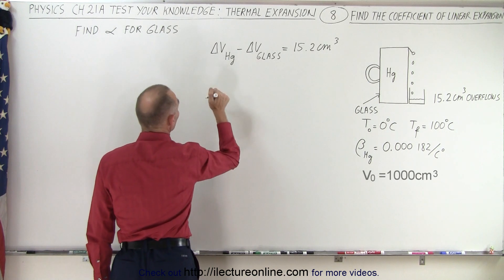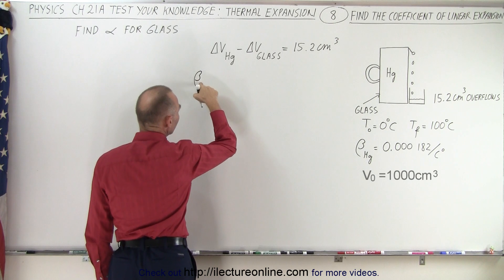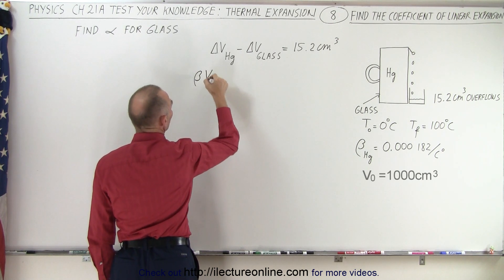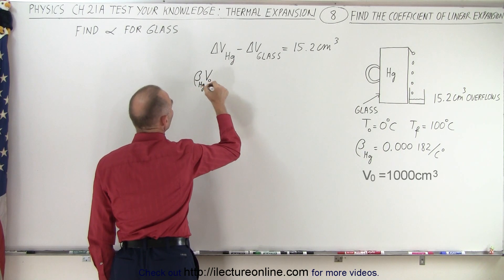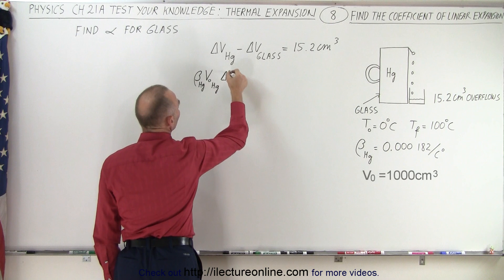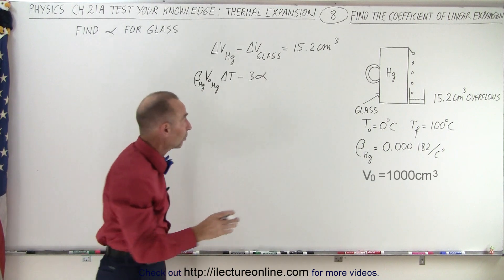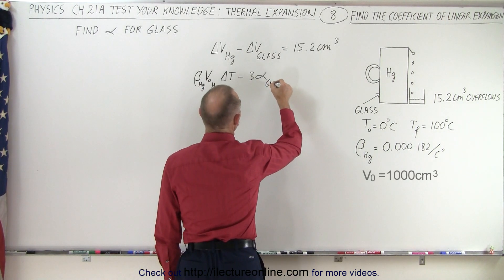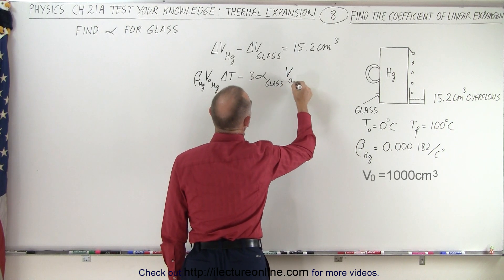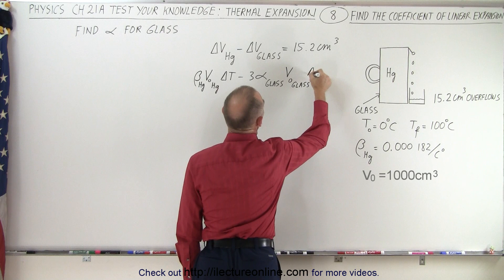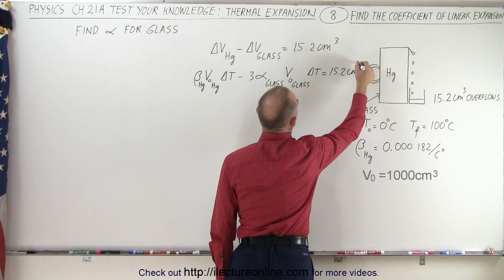First of all, the change in volume for mercury is the volume coefficient of expansion for mercury, times the original volume of mercury, times the change in temperature. Minus three times the linear coefficient of expansion for glass — because that's how volume and linear coefficients relate — times the original volume of the glass, times the change in temperature. That expression must equal 15.2 cubic centimeters.